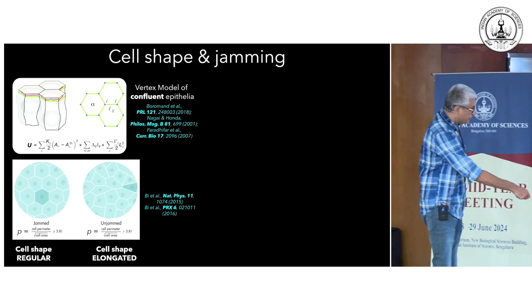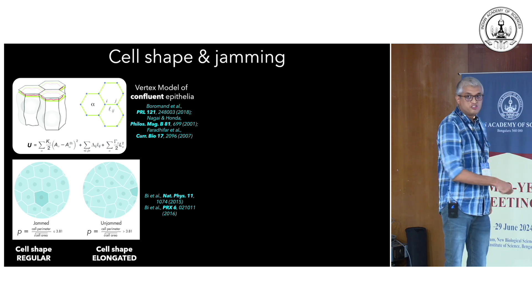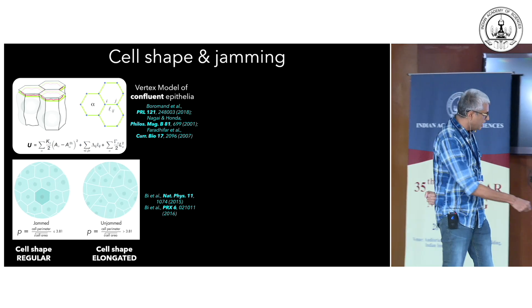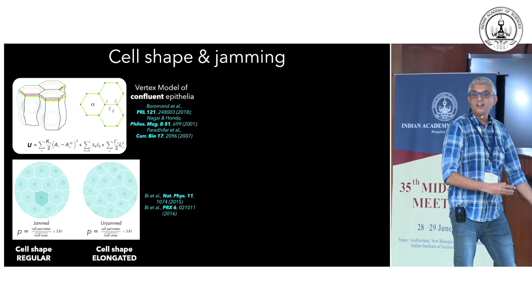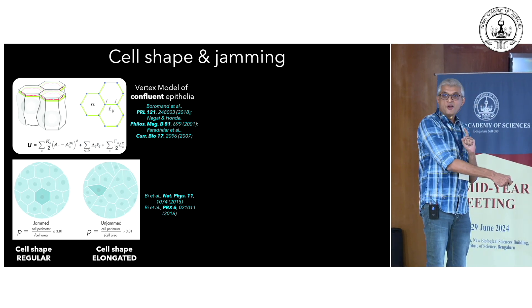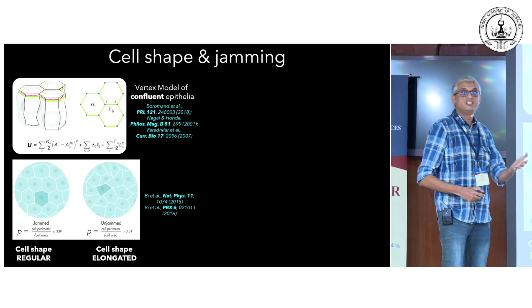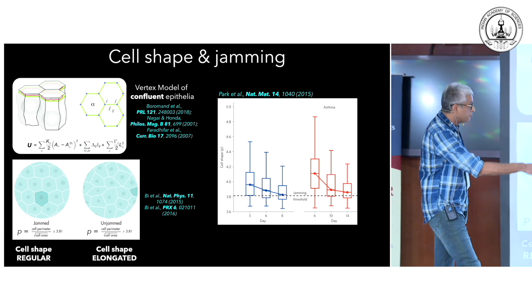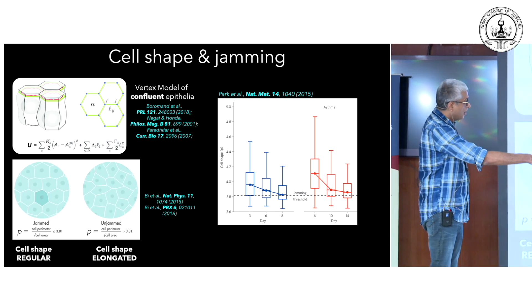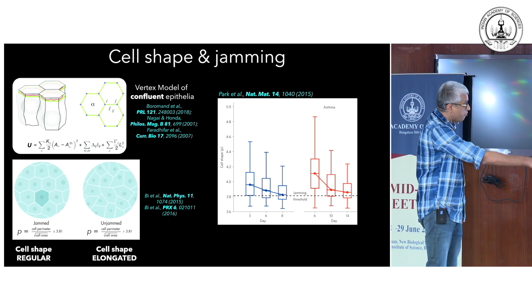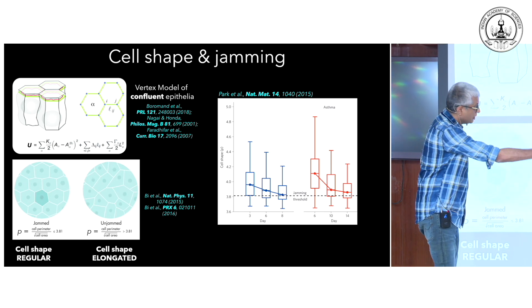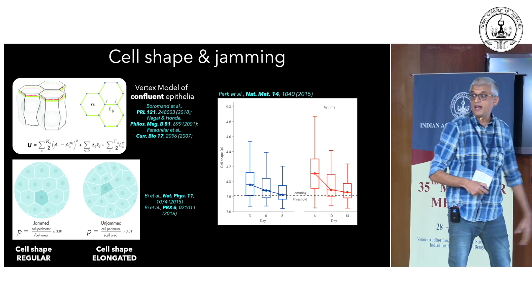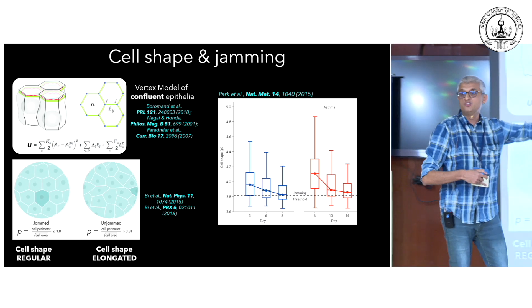The model predicts that if the shape index is less than 3.81, you get jammed states in which cells are held in place. If the shape index is greater than 3.81 — meaning the cell shape is more elongated — you get fluid-like packings. This is a completely confluent monolayer even in the model, so fluidization is driven by changes in cell shape. The authors who made the video found that as maturation happened, the shape index started above 3.81 in the fluid-like state and approached 3.81 as cells jammed. Healthy and asthmatic cells showed very different timescales over which jamming occurred.